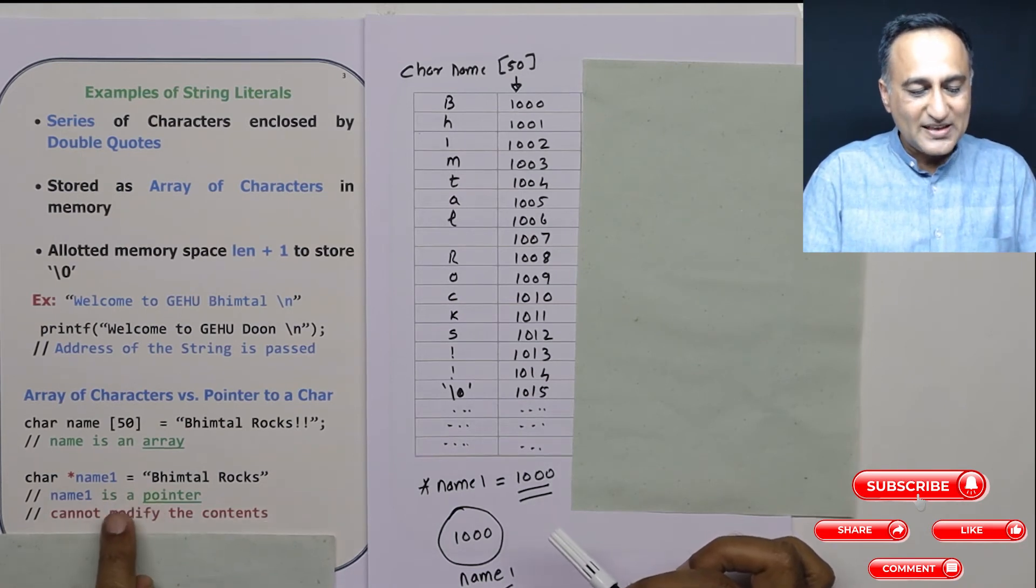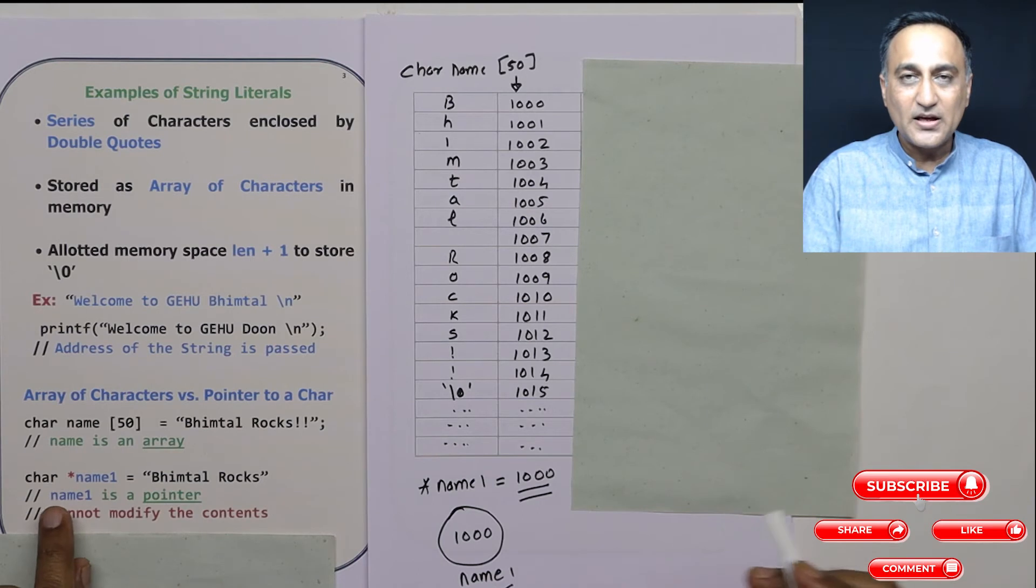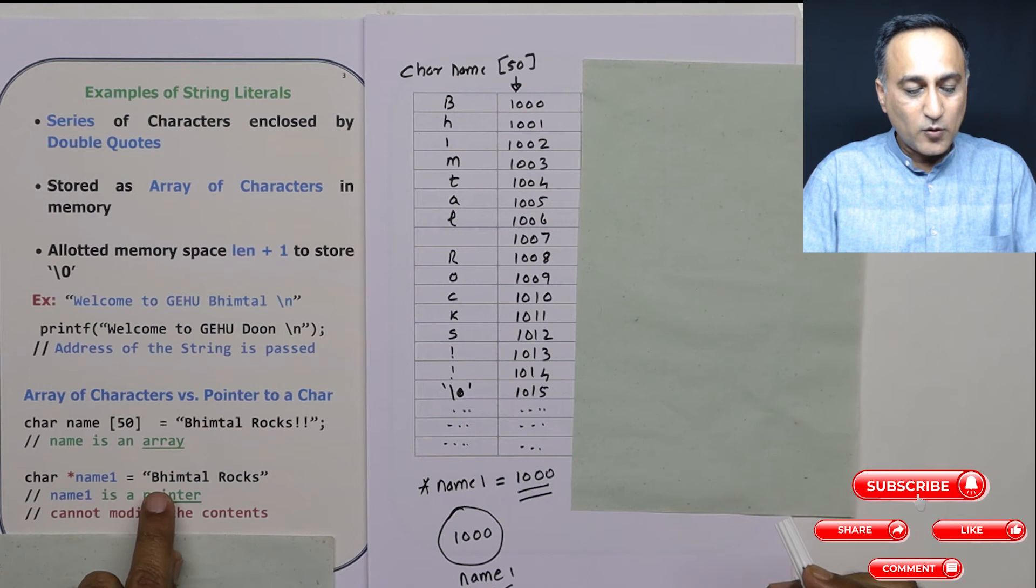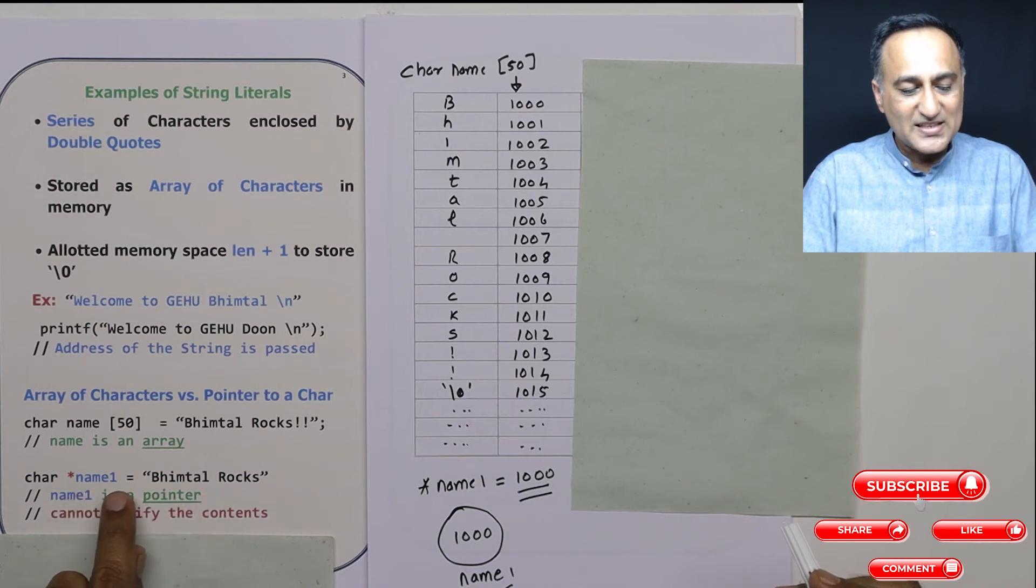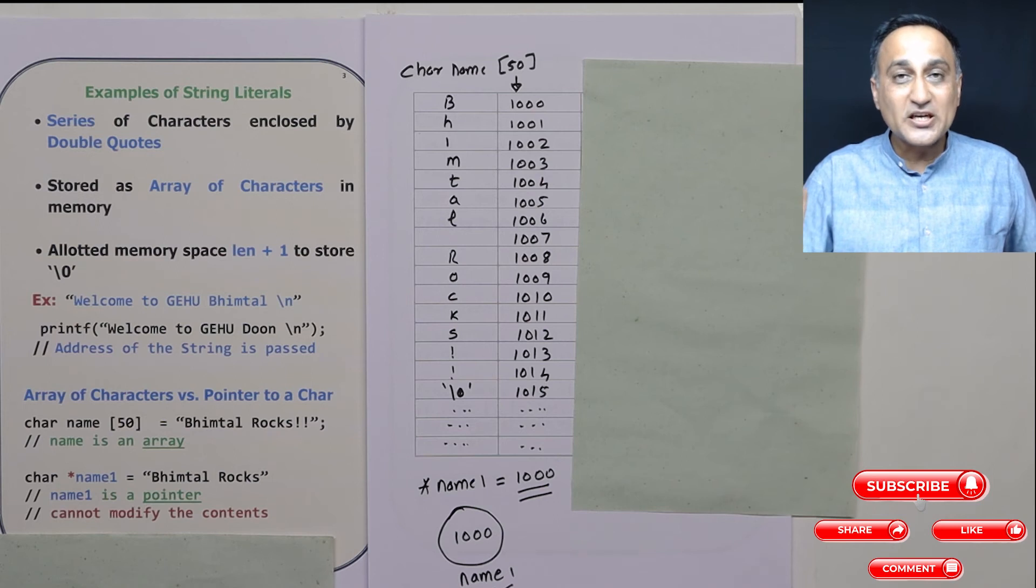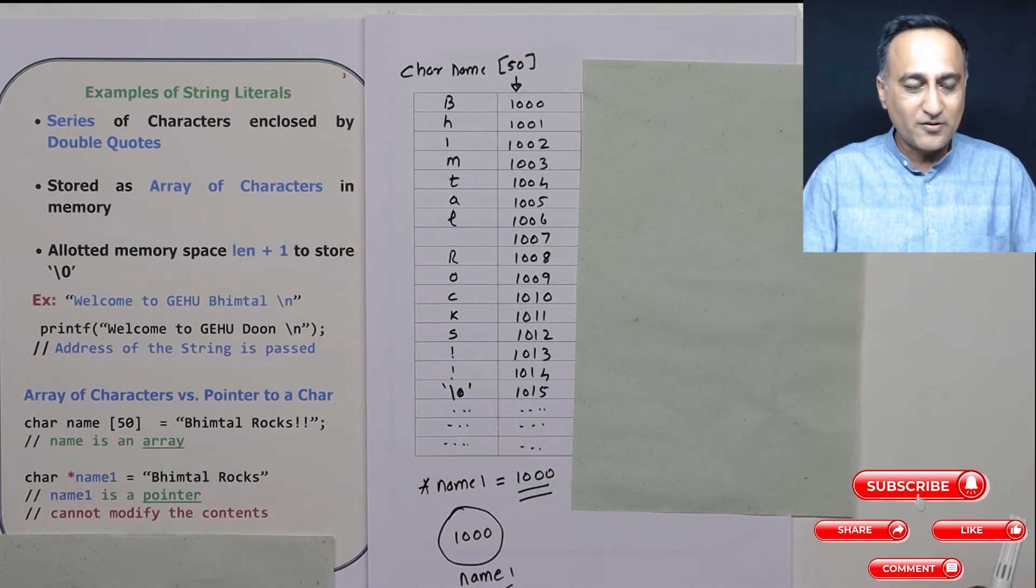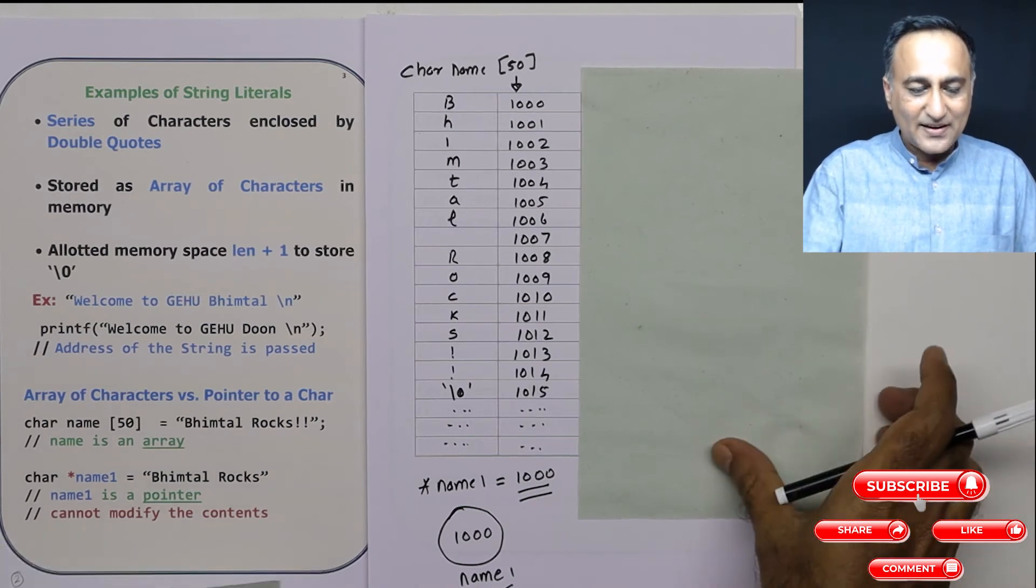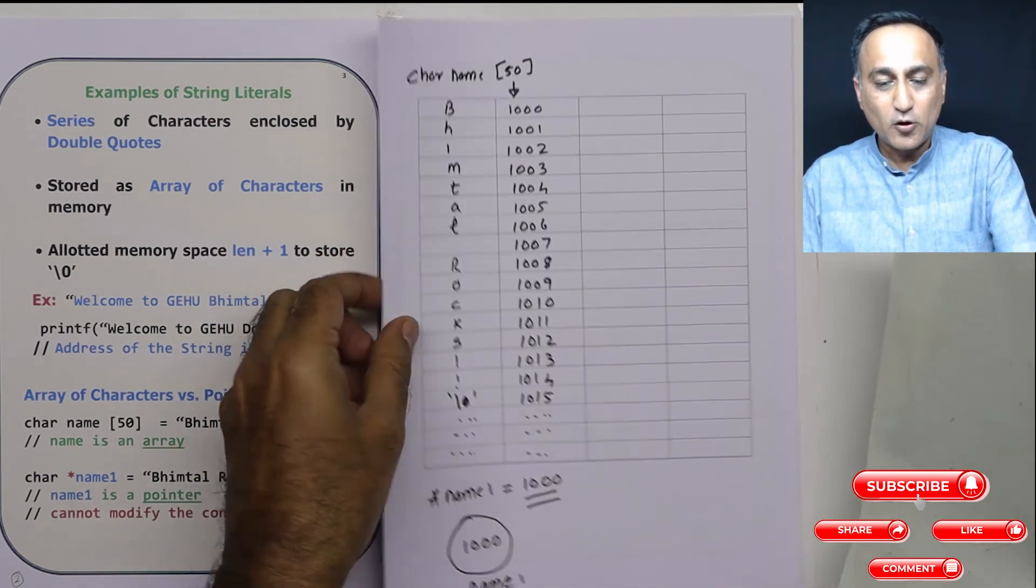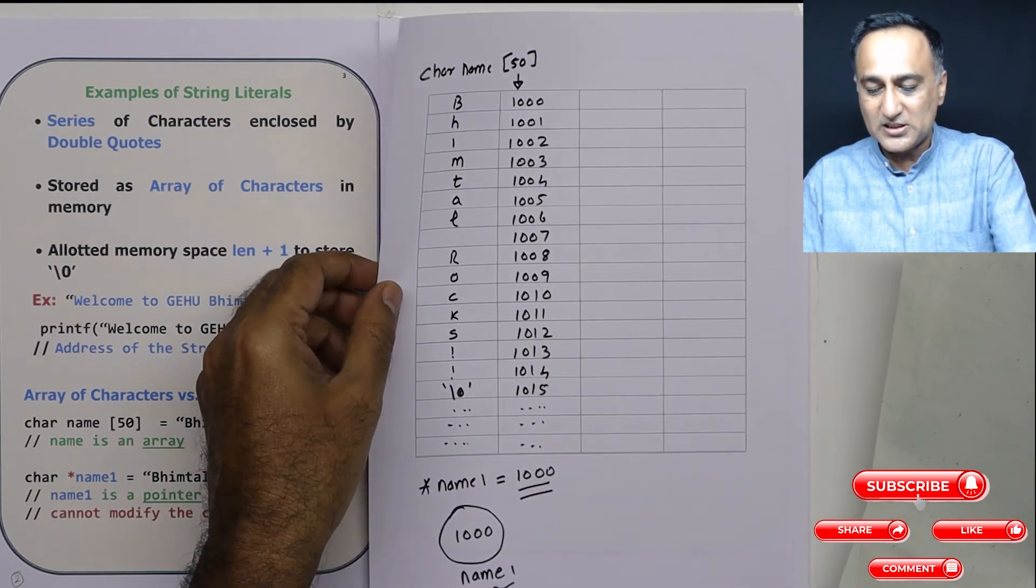Name1 is a pointer to a character. The meaning of the star is when you apply star on name1 you can print B. Now this "Bhimtal rocks" if I initialize it this way is stored in an area of memory which cannot be modified. If I try to change B, h or anything in this, the compiler is going to give me an error that I will try to show you not only through a demo which follows this particular video but also as an example on the next page.